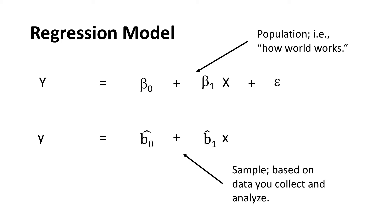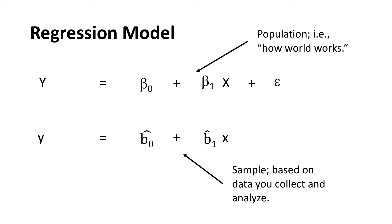When we do regression analysis, we'll typically start from a population regression model. We can write out a population regression model as y equals beta subscript zero plus beta subscript one times x, plus epsilon. This population regression model is a statement of how we think the world works. So in this case, we think the variable represented by x has an effect on y. But we also know that there are lots of other things that might have an influence on y, which is why we insert this error term labeled as epsilon.